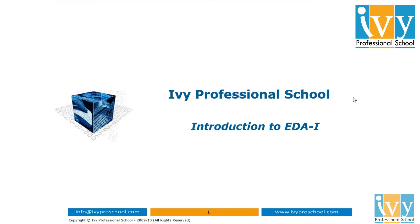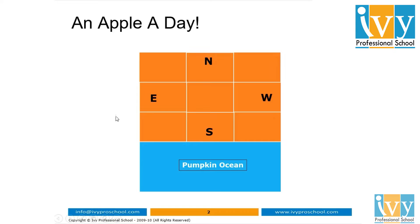Let us suppose all these orange boxes form a continent, of which these orange boxes individually are countries, and this blue box below this continent is an ocean which is called the pumpkin ocean. Now let us name the north, east, south, and west countries of this continent as follows.